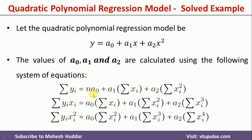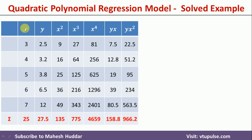To calculate these values, I will prepare a simple table. x and y are given, so we take the summation of x and summation of y. Next, I calculate x squared and take the summation of that column. Similarly, I calculate x cubed, then x raised to the 4th power. We also need yx — multiplying x by y — and take the summation of that column, and y multiplied by x squared, taking its summation as well.